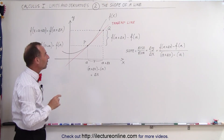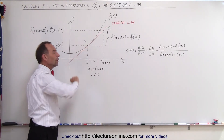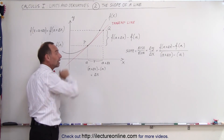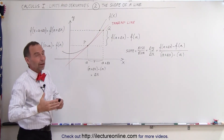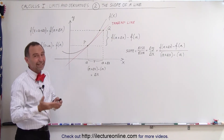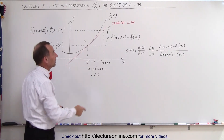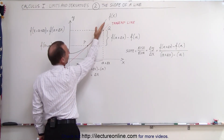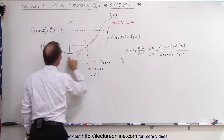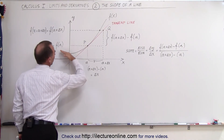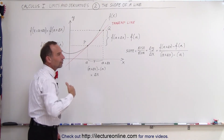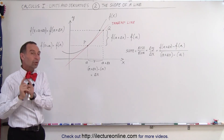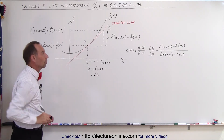So later on, we will learn that to find the slope of the function, we need to find the slope of the tangent line at the particular location of the function. Depending upon where we are in the function, we'll need a different tangent line. If we want to know the slope of the function at one location, we draw a new tangent line there; at another location, we draw a different tangent line. So the slope of the tangent line will only equal the slope of the function at one particular location.